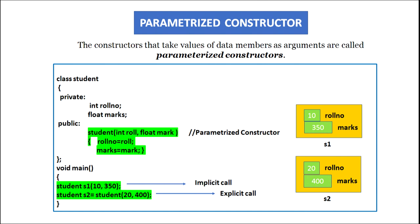This is the implicit call of the parameterized constructor. The second statement 'student S2 = student(20, 400)' is the explicit call of parameterized constructor, in which the values 20 and 400 are passed to the parameterized constructor. Object S2 is created, memory is allocated to its data members roll number and marks, and 20 is assigned to roll number and 400 to marks.